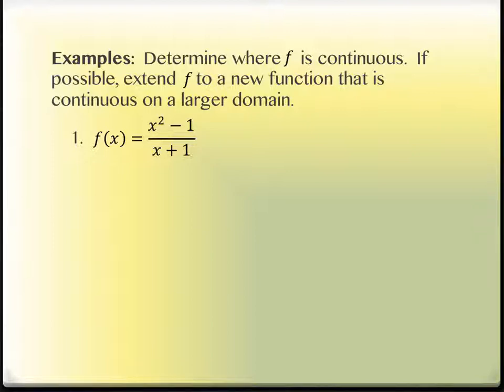It says, if possible, extend f to a new function that's continuous on a larger domain, which sounds a little bit awkward. It's actually a lot easier than they made it sort of sound, but it sounds awkward. All right, so let's do the first thing first, though. Determine where f of x is continuous or f is continuous. The catch is, we don't really ask ourselves, where is it continuous? We look at it and we say, where is it not?